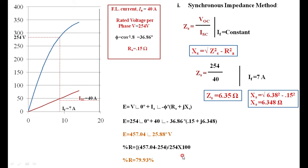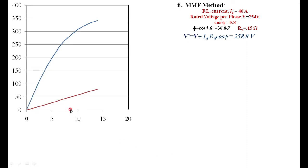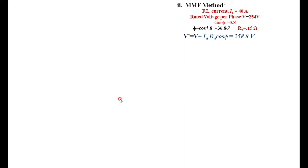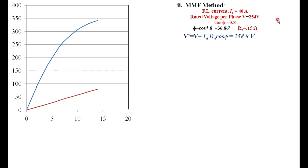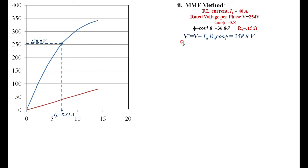Next, the same problem is solved using the MMF method, which also requires OCC and SCC. First, find V' = V + IA·Ra·cos φ = 254 + 40 × 0.15 × 0.8 = 258.8 V. Project 258.8 V on the OCC to find IF1 = 8.31 A. This IF1 corresponds to the field current required to generate the internal voltage V'.